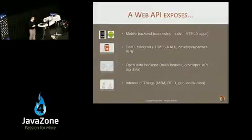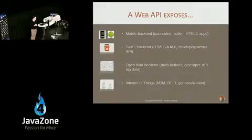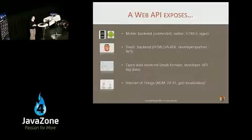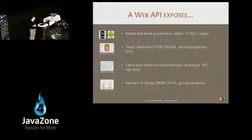From the producer point of view, a web API allows to expose data for a mobile back-end, for a mobile application, for a SaaS solution, open data, and of course for one of the most promising waves, which is the Internet of Things. There are billions and billions of interconnected machines on the Internet, so this is a very promising market for the future.